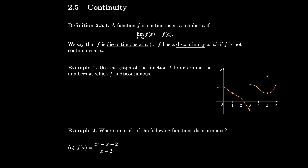Let's use the graph of f to determine the numbers at which f is discontinuous. At x=1, there's a hole, so the function is not defined there. There's no way the limit can equal the value of the function because the value doesn't exist. So f(1) is not defined, which implies f is discontinuous at 1.